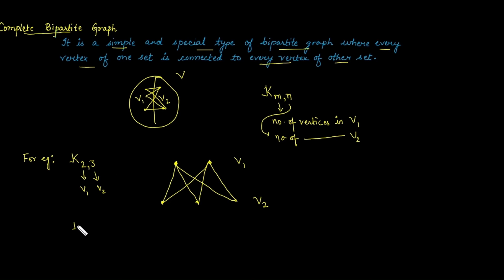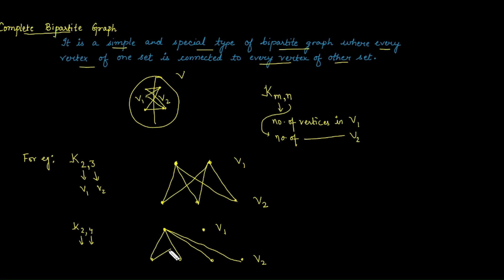Let's take another example, K2,4. In this case, there are two vertices in V1 and four vertices in V2. Connect every vertex of V1 to every vertex of V2. This gives the complete bipartite graph K2,4, which is equal to K4,2 — you can swap V1 and V2 and get the same graph.